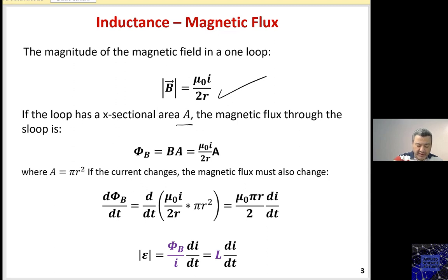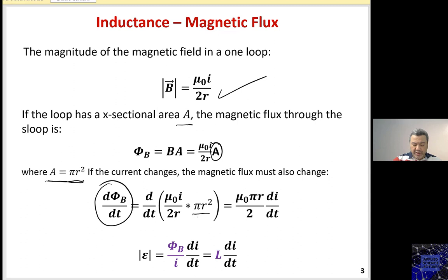If the loop is of a circular shape, then the area would be πR². Substituting here, the electromotive force is dφ/dt = d/dt of (μ₀I / 2R) times πR². After manipulation, this becomes (μ₀πR / 2) times dI/dt.